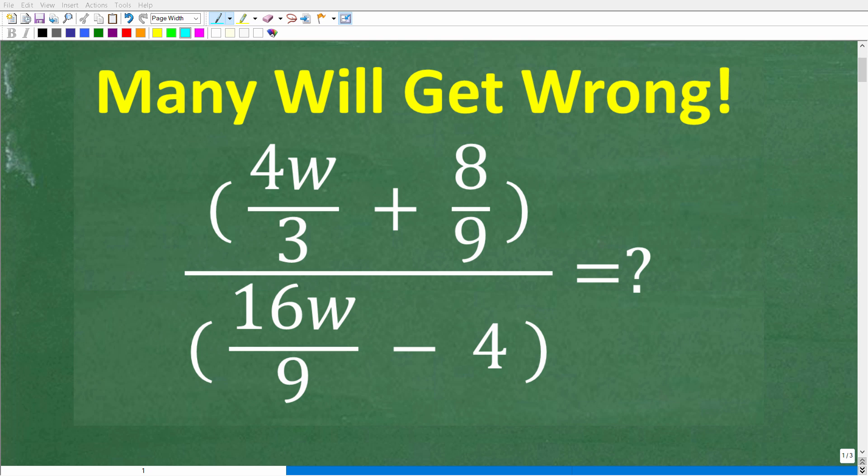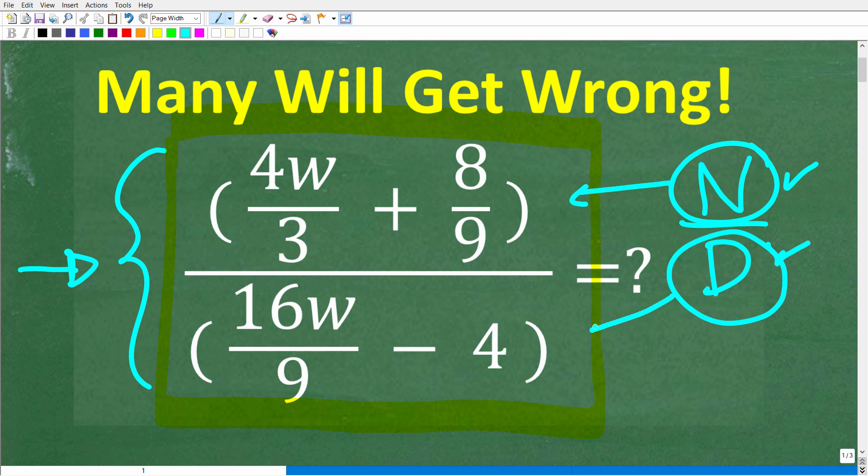Okay, so let's see if you have the fraction skills to solve this problem. What we're looking at here is something called a complex fraction, and we want to simplify this complex fraction. Now what is a complex fraction? Well, in a fraction you have a numerator and a denominator. So if you have a fraction in the numerator or a fraction in the denominator or in both, you have a complex fraction like we have right here.